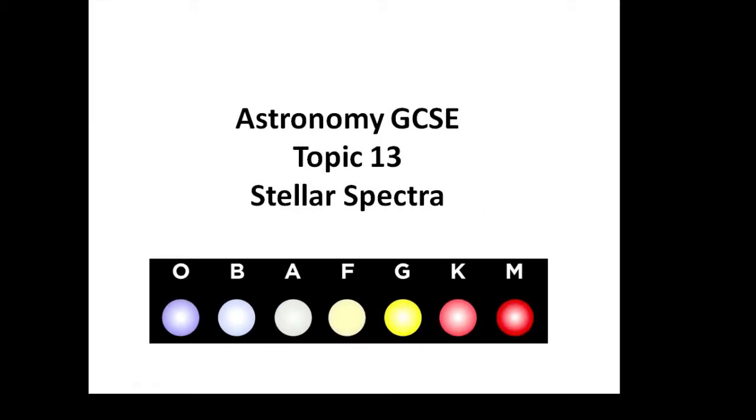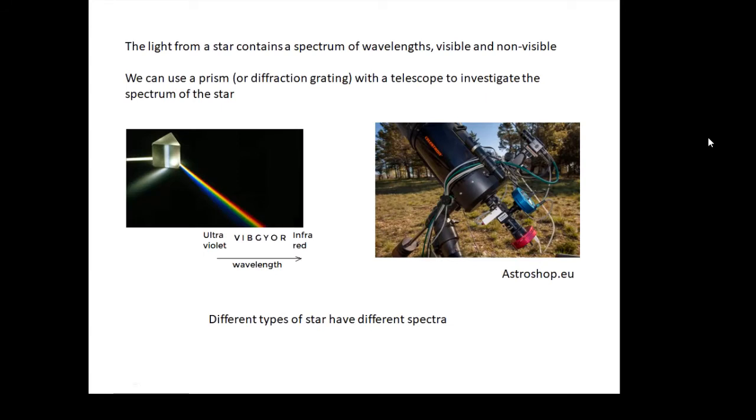Astronomy GCSE topic 13: stellar spectra. If you get white light, like light from the Sun, and you put it through a prism or something called a diffraction grating, then what happens is that the different wavelengths get separated and you can look at the different wavelengths which are there.